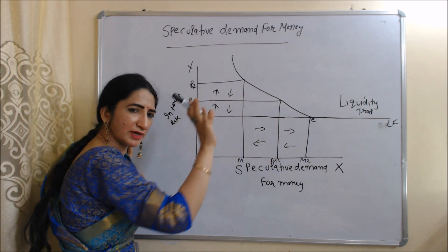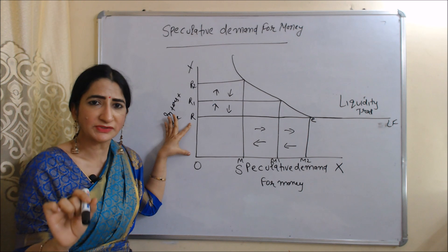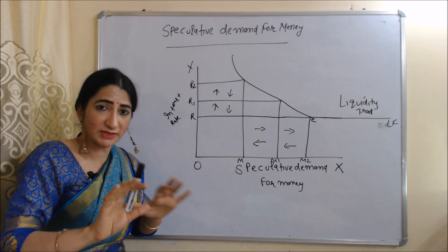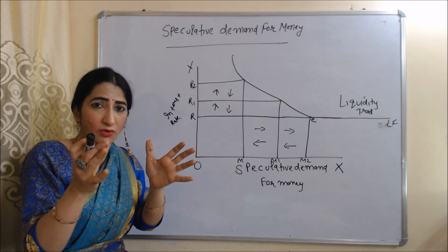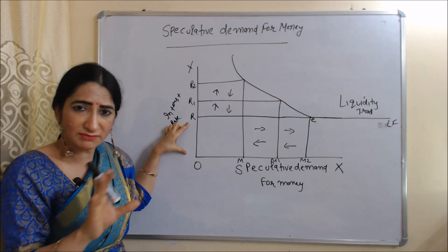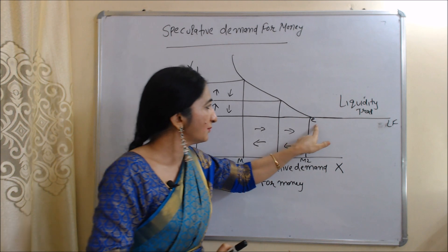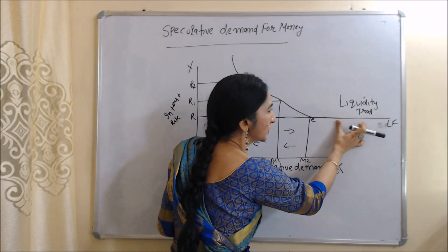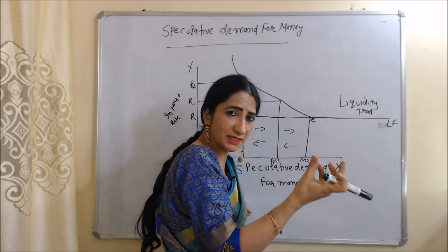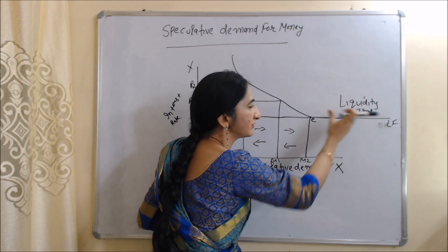At a very low interest rate, people don't want to invest in the money market because the interest rate is too low — they will wait for interest rates to rise in the future. They will hold their own cash kept for speculative purposes. That's why, after point E, the liquidity preference curve becomes horizontal, which tells us people have absolute liquidity preference: they are not investing in the money market and are holding their own cash. This part is called the liquidity trap.